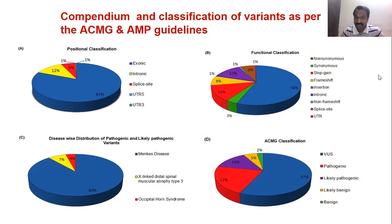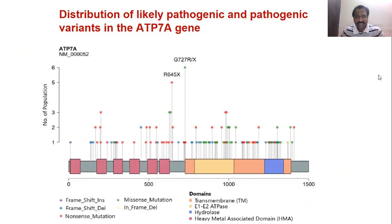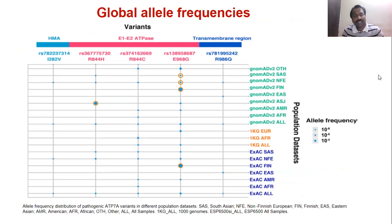The majority of mutations are concentrated in the ATPase domain as well as the copper binding domain. Examining global prevalence, certain variants are predominantly expressed in specific populations, and those variants can be used for mass-scale population screening.